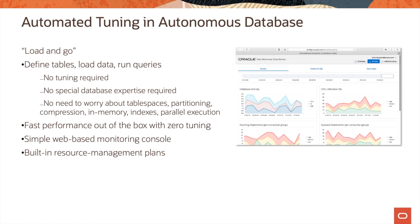Let us now look at automated tuning in Autonomous Database. When it comes to loading data, customers can just load and go — they define the tables, load data, and start running queries. Customers don't have to worry about any tuning activities or special database expertise. They also don't have to worry about creating and managing tablespaces, partitioning, compression, in-memory, indexes, or parallel execution. Oracle Autonomous Database gives performance out of the box with zero tuning.